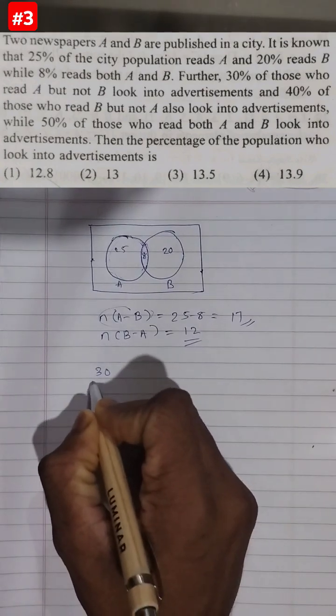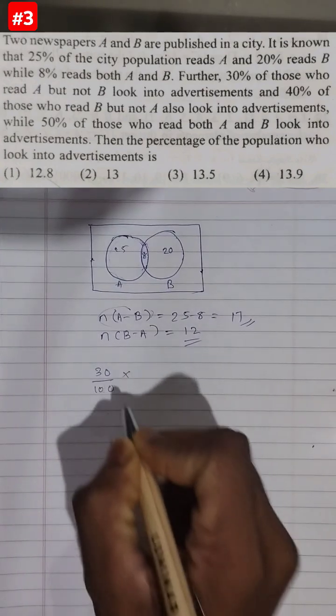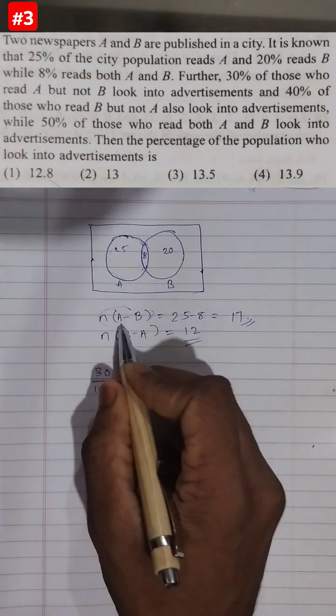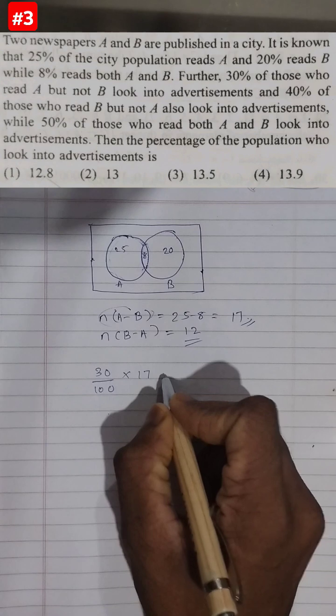So 30% means 30 by 100 into this. That is, the number of people who are reading A but not B is looking into advertisements.